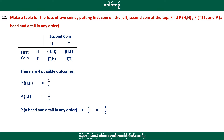How to make a table for the tosses of 2 coins. If you are going to make a table for the tosses of 2 coins, you should put the first coin on the left. The first coin is heads or tails. The second coin goes at the top — heads or tails — like this.